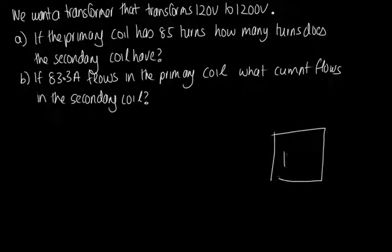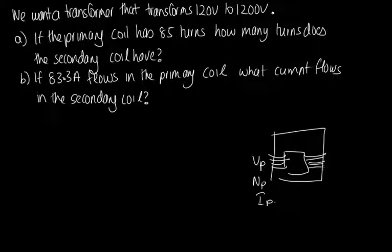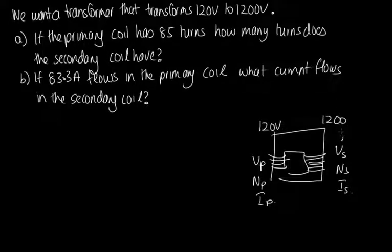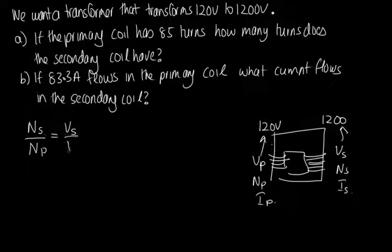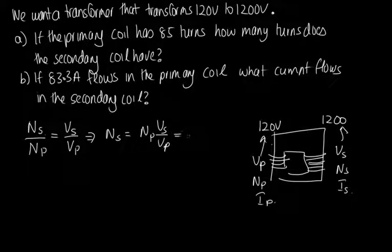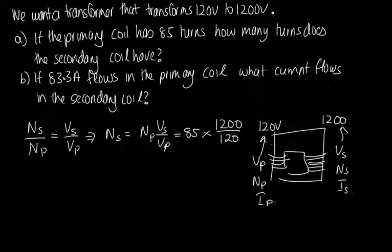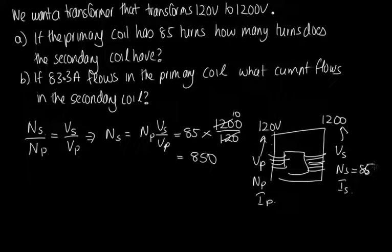For part A, we have a step-up transformer with V_P = 120 volts and V_S = 1,200 volts. Using N_S / N_P = V_S / V_P, we get N_S = N_P × V_S / V_P = 85 × 1,200 / 120 = 85 × 10 = 850 turns. So we need 850 turns in our secondary coil.